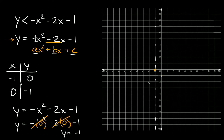Now in order to find a third point, remember this line is also the axis of symmetry. So if we have one point on one side of the vertex, we can just mirror that point to the other side to get our third point.